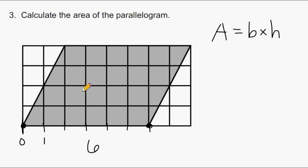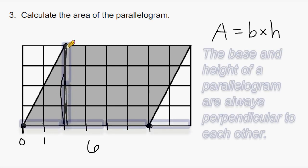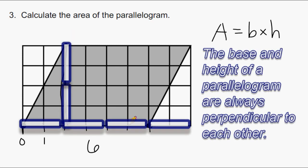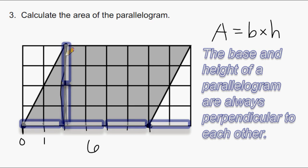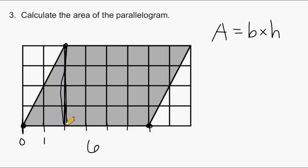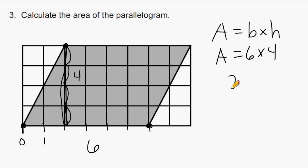To calculate the height, we go to the very top of the parallelogram and draw a line straight down. The height must be perpendicular to the base — the slanted side is not the height. Counting from the bottom upward gives a height of 4 units. So we take 6 times 4 to get an area of 24 square units.